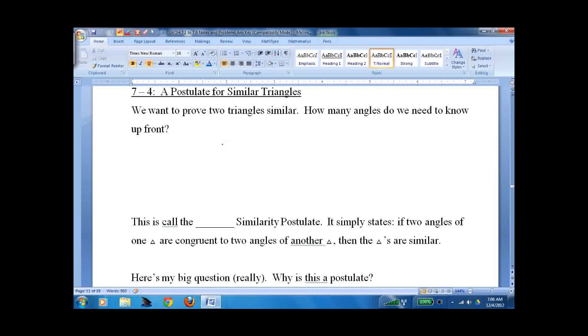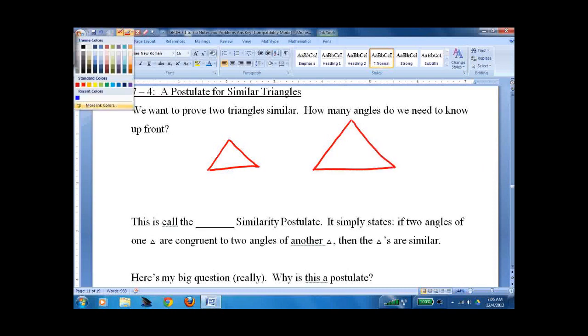So, how many angles do we need? We've got a triangle here and a similar triangle here. And I happen to know that this angle is congruent to this angle, and this angle is congruent to that angle. Do I need more than that? Think about it for a second, you might want to pause the recording.